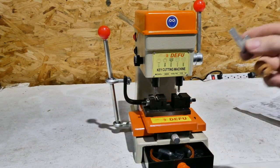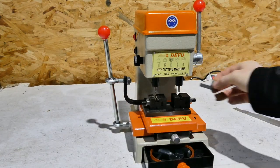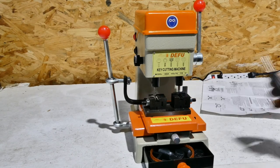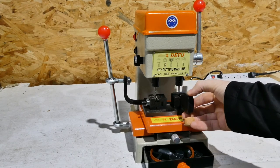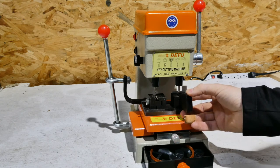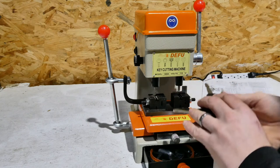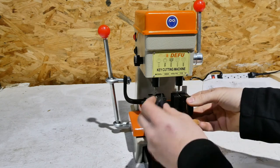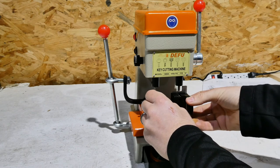So this piece here is a stop so you can line your key up like that and get it even with your original. So your original is going to go on the right side and your copy will go on the left.